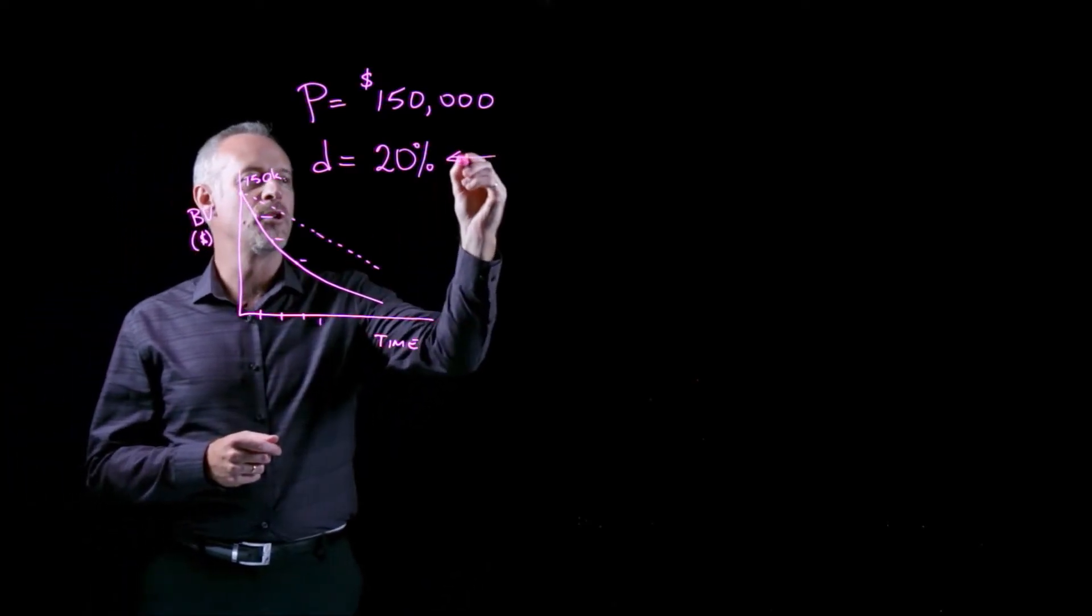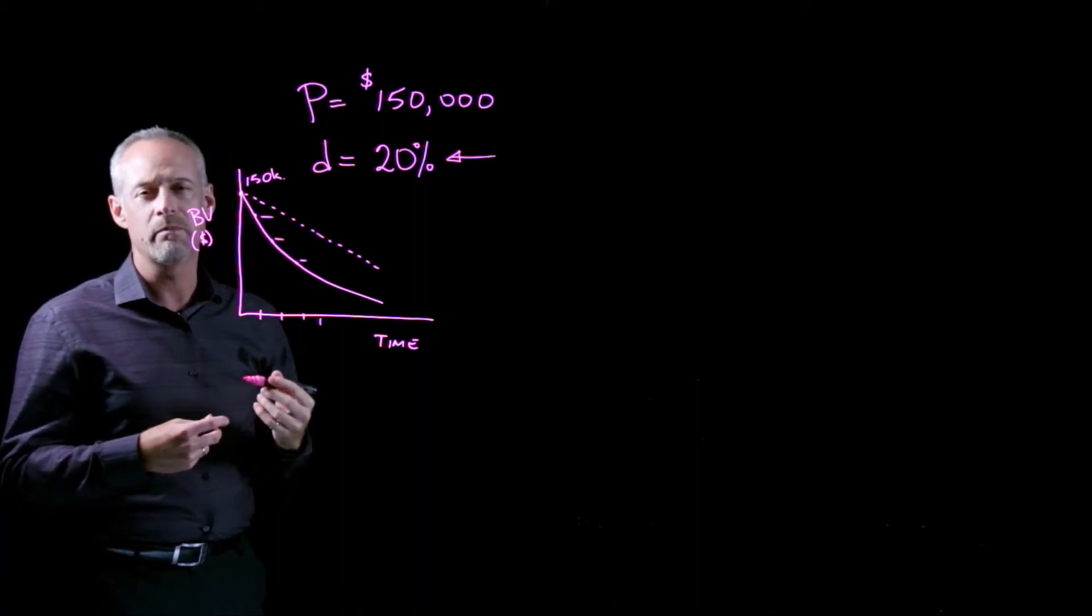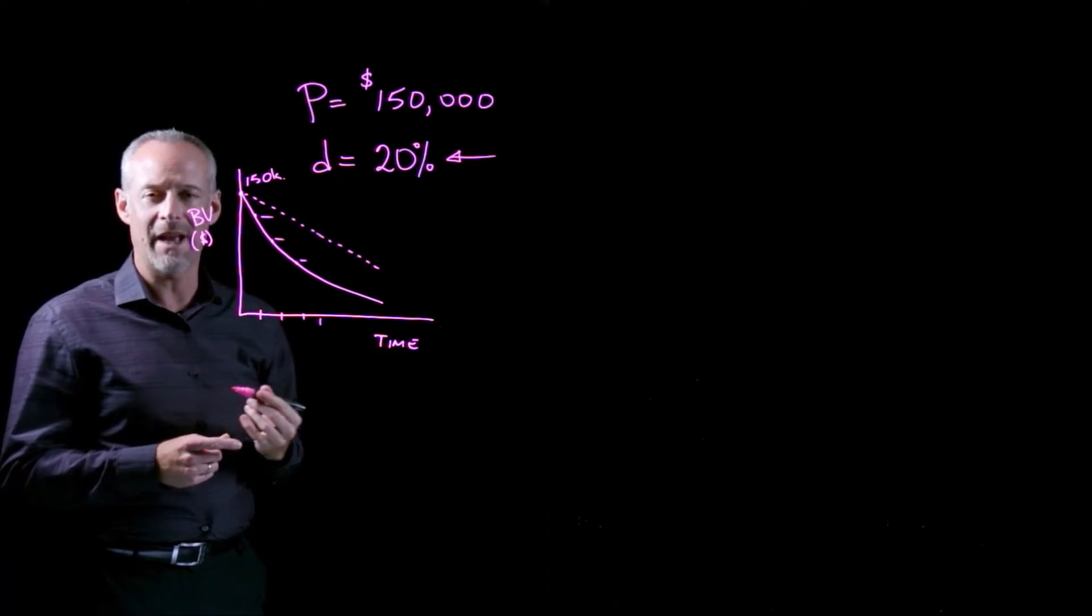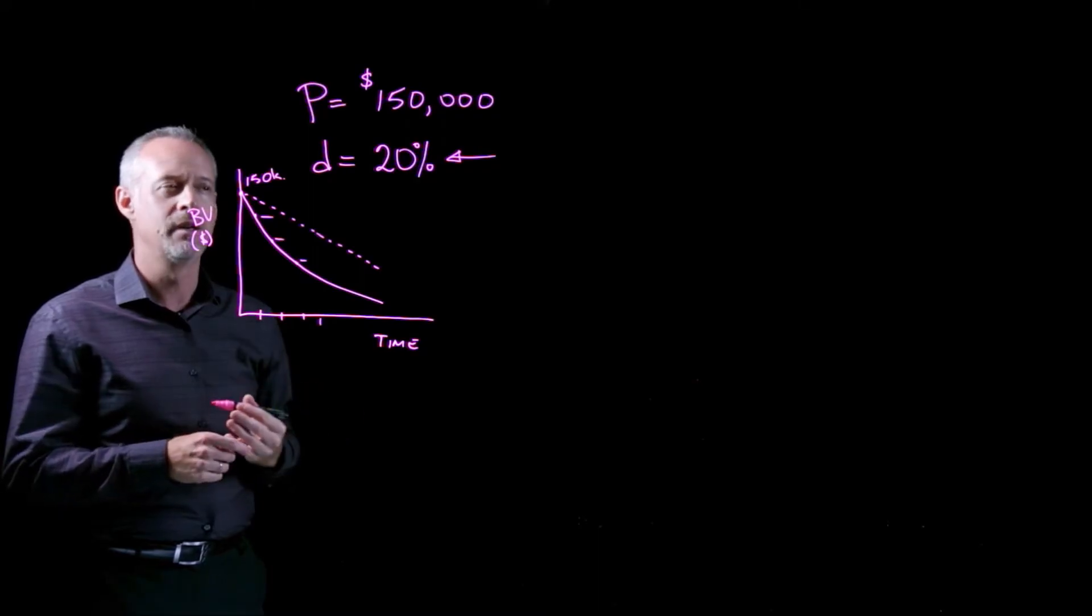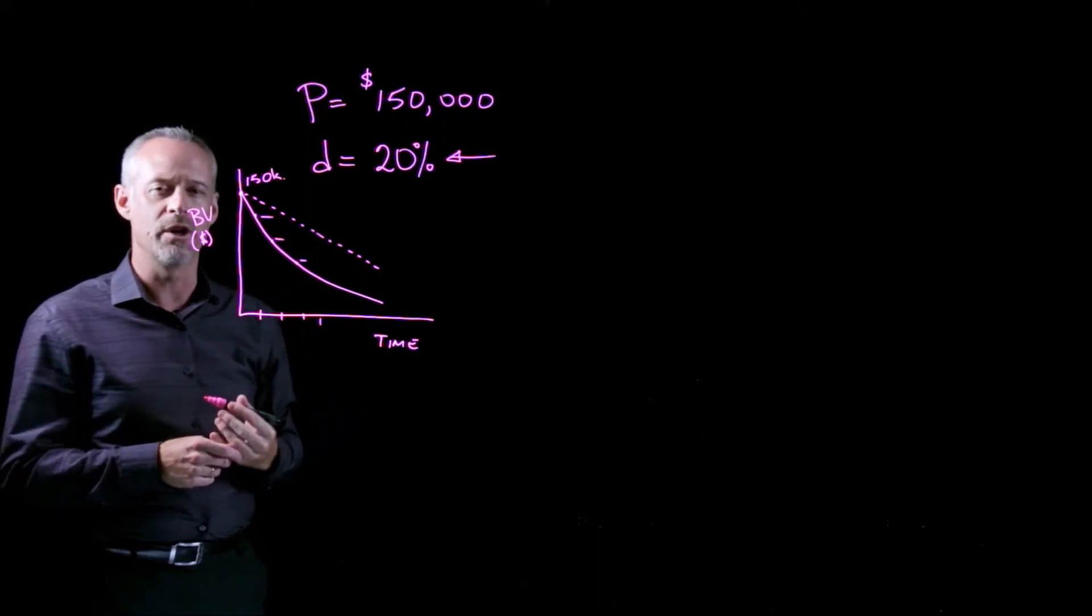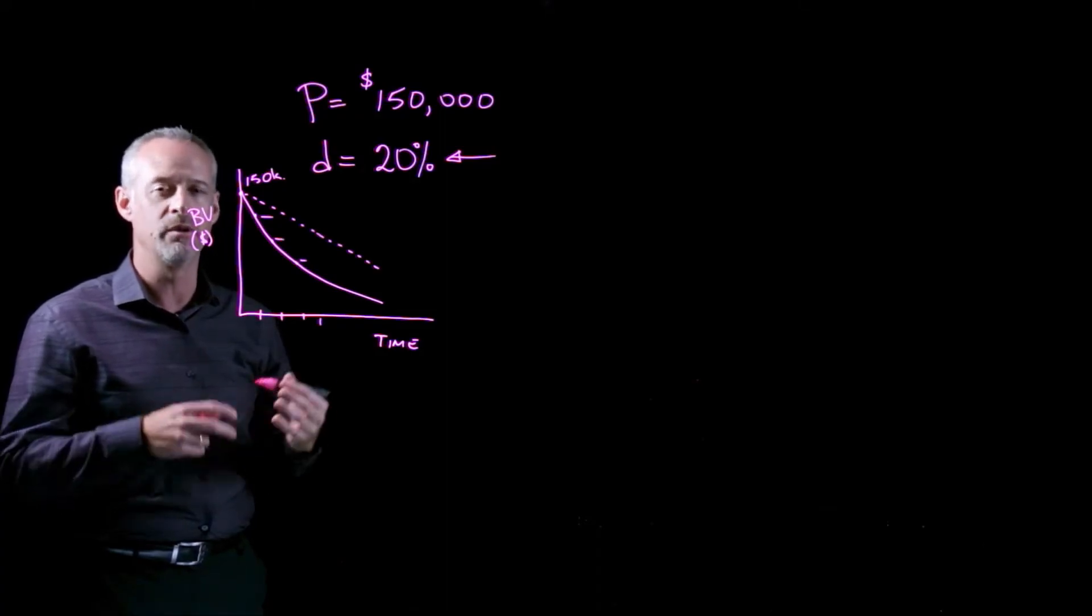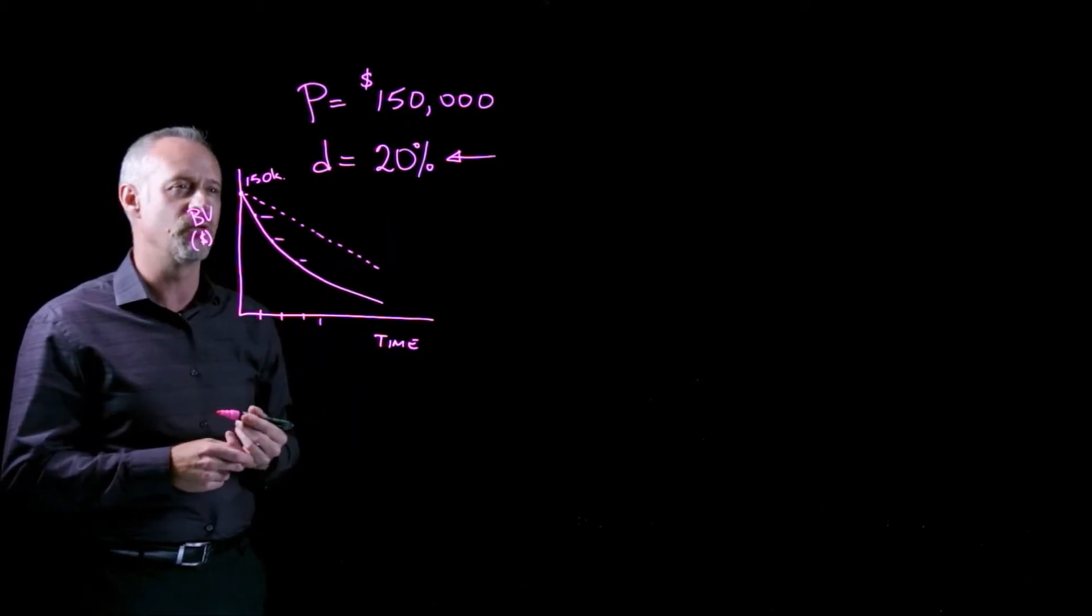Later on, we'll learn where this depreciation rate comes from in real life. In Canada, we separate assets into classes, and each different class of asset has a different depreciation rate associated with it. But in this problem, we're just given the rate of 20%. We don't need to determine what type of asset and what accounting depreciation rate is specified for any particular accounting jurisdiction.